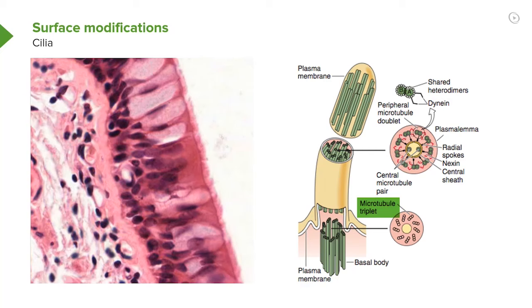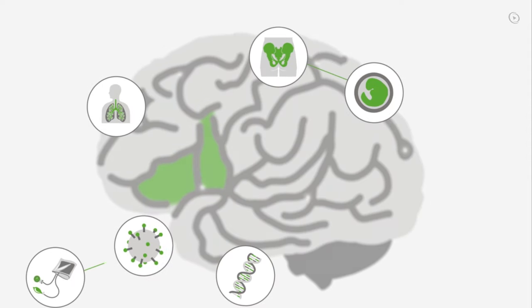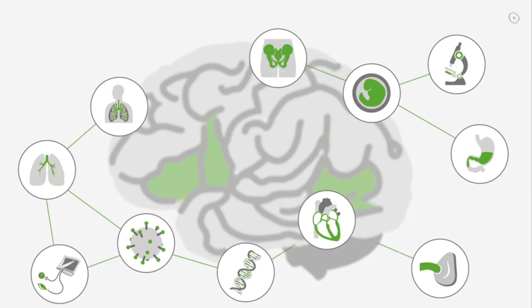All the basal bodies are connected to each other in many ways, which allows the cilia to beat in unison, together, in one direction or the other. This enables them to move along the surface of the epithelium foreign bodies, secretory products, or even cells.